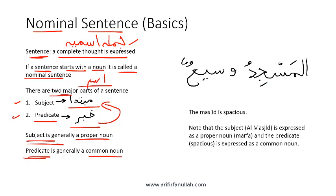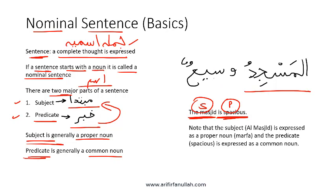Here is an example. If we want to say 'the Masjid is spacious,' the Masjid is the subject and 'is spacious' is the predicate or Khabar. The Masjid needs to be expressed as a proper noun, so we say Al Masjidu. The fact that it is spacious needs to be expressed as a common noun, so we say Wasiun. Wasiun means spacious. This becomes the sentence: the Masjid is spacious.